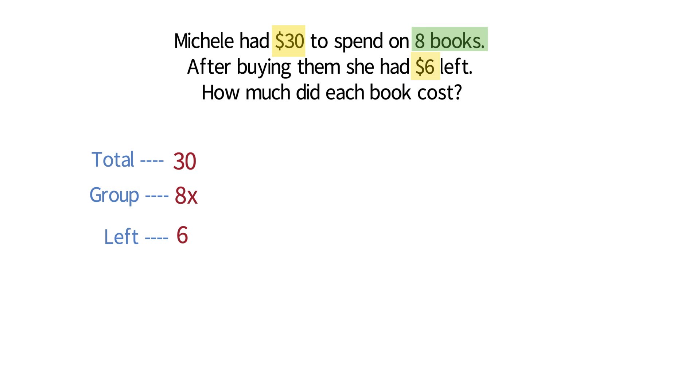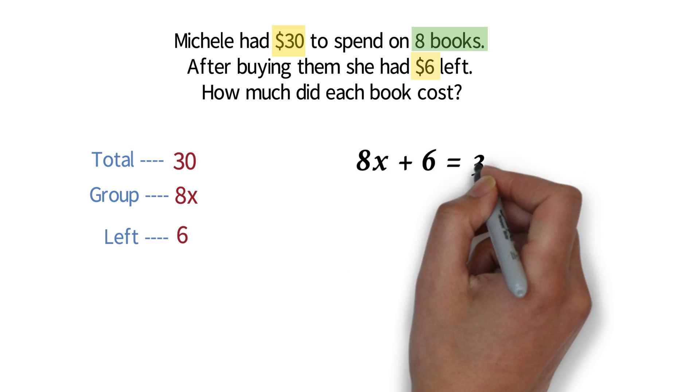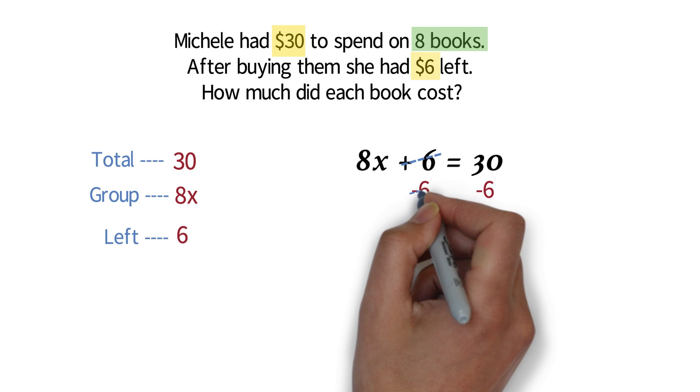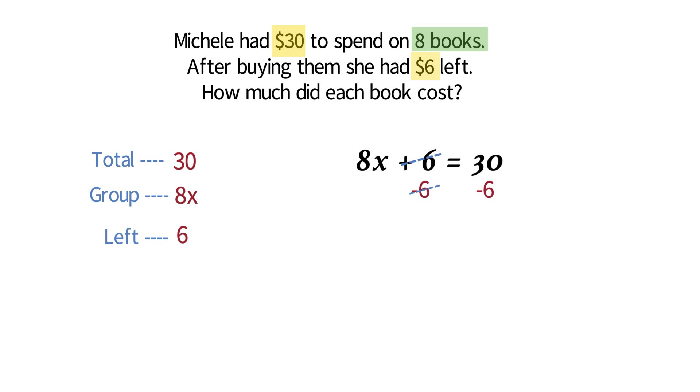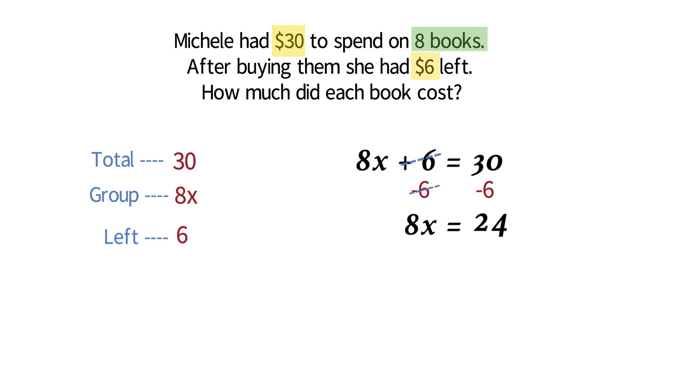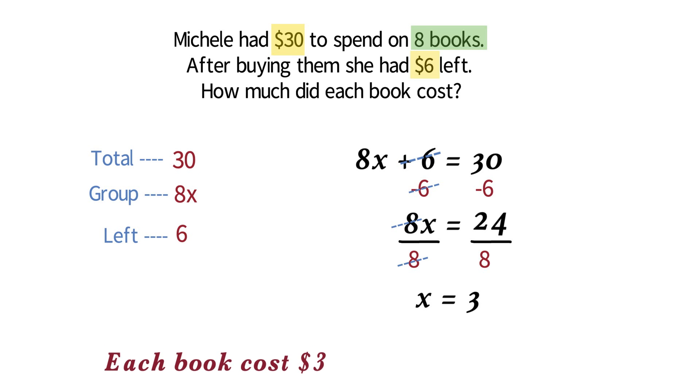So we will have our equation as 8x plus 6 equals 30. We have a two-step equation. Subtract 6 from both sides. The 6 will cancel out. 30 minus 6 is 24. We have 8x equals 24. We have a one-step equation. We divide both sides by 8. The 8 will cancel out. 24 divided by 8 is 3. x equals 3. This means that each book costs $3.